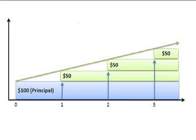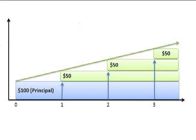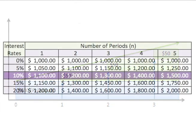Simple interest is calculated on the original principle only. In other words, accumulated interest from prior periods is not used in the calculation for the following periods. For example, if I invest or borrow $1,000 at 10% for 5 years, my interest will be $100 for each year.